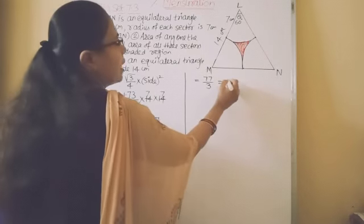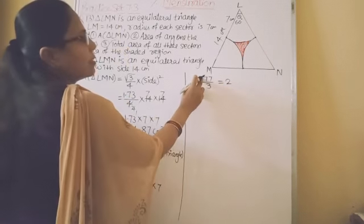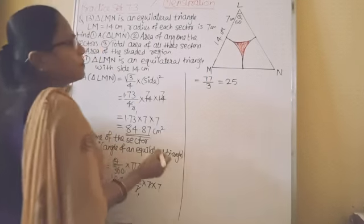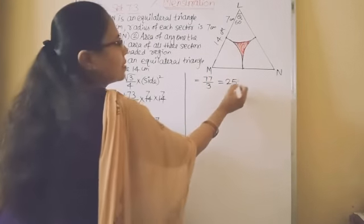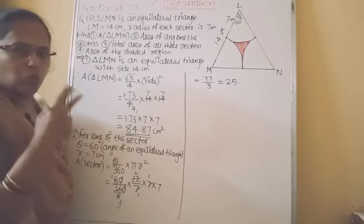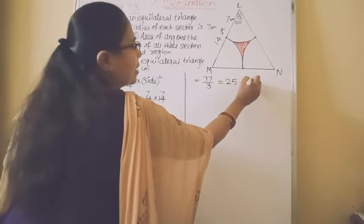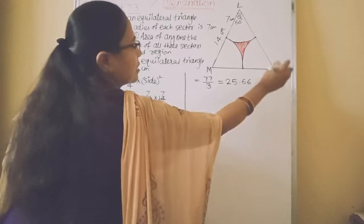So 3, 2's are 6. We have remainder 17. 3, 5's are 15. Point. Reminder is 2. Take extra 0. 3, 6's are 18. Again, you will get 6. So 6, 6, 6 recurring.